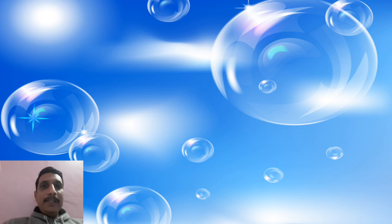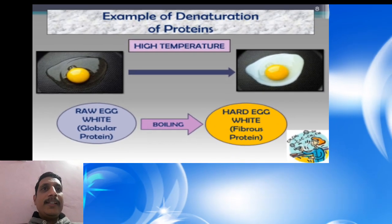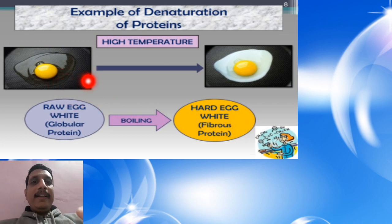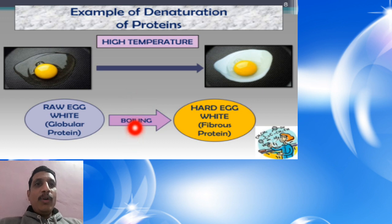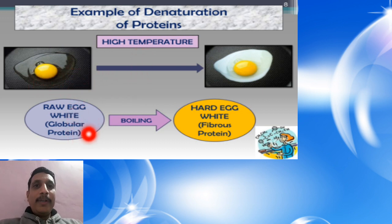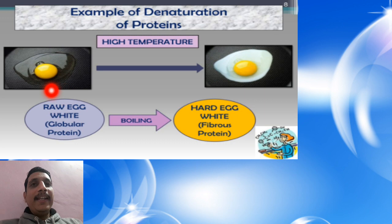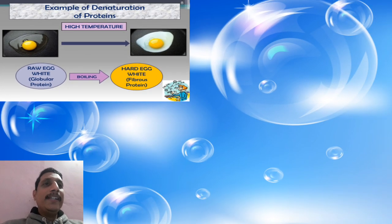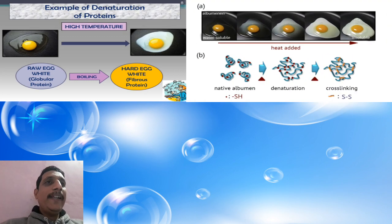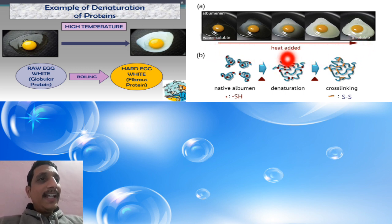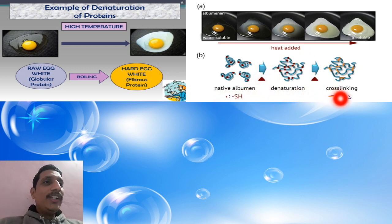Looking at the diagram of denaturation of protein: the raw egg contains globular protein — that is egg albumin, which is water soluble. When heat is applied, it becomes water insoluble. The native albumin undergoes denaturation forming a cross-linked structure.